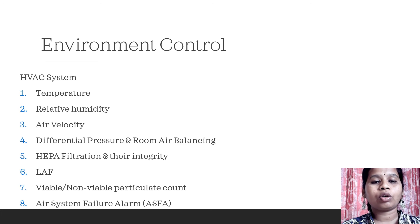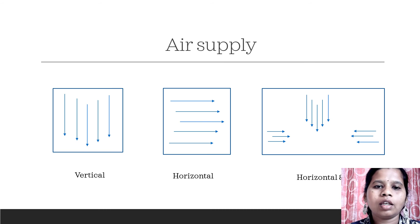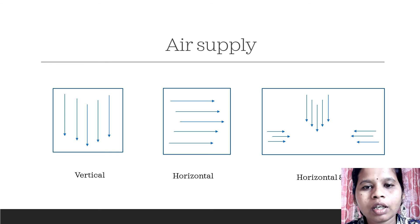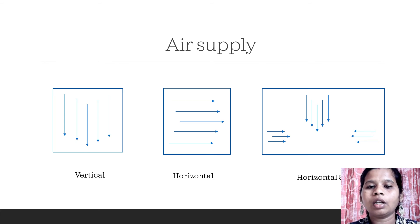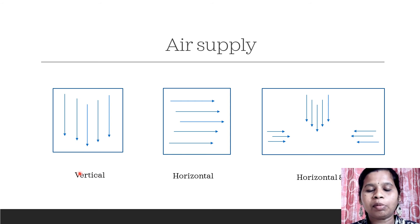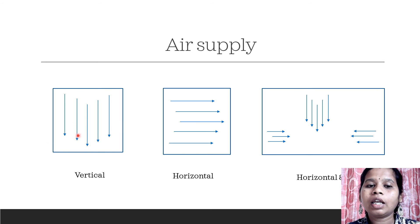For environmental control in different grades, laminar air flow units are used. These units have different types of air supplies — the air flow can be vertical, horizontal, or a mixture of both. The vertical type is the most preferred, where in the closed cabinet of the laminar air flow unit, air comes from the top, flows downward through the working area, and flushes away all particulate matter.